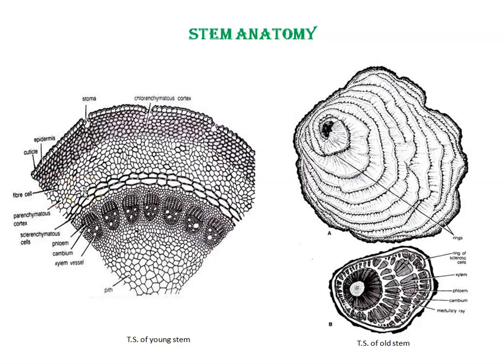The inner cortex is 2 to 5 cells in thickness. Cells are thick-walled, polygonal, and branched or unbranched pit canals are also seen here — these are sclerenchymatous cells of the inner cortex. Endodermis is the innermost layer of the cortex, consisting of a single layer of thin-walled cells, and is not very conspicuous in the case of Gnetum.